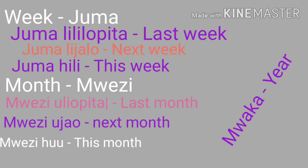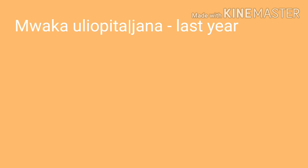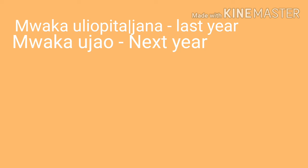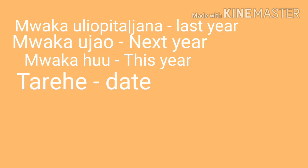Mwaka means year. Mwaka uliopita means last year — or you can say mwaka jana, literally 'yesterday year,' but it means last year. Mwaka ujao means next year. Mwaka huu means this year. You can see mwaka and mwezi are in the same noun class, since both use 'huu' — mwezi huu, mwaka huu.